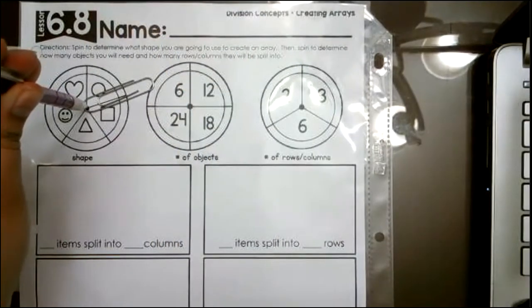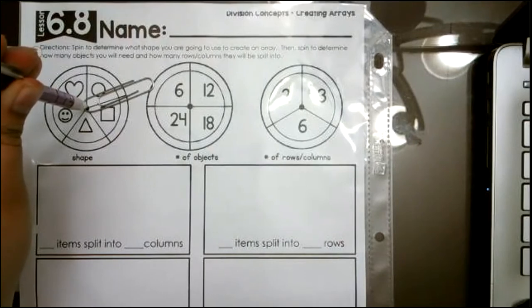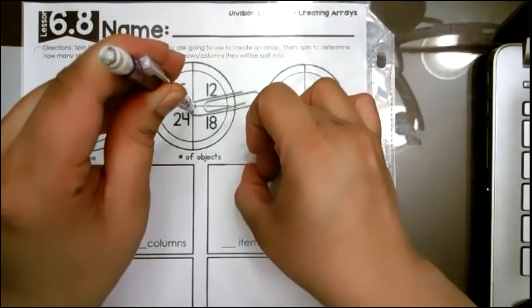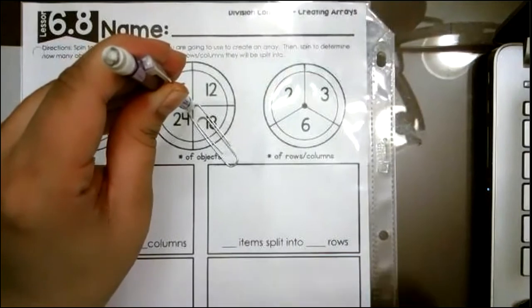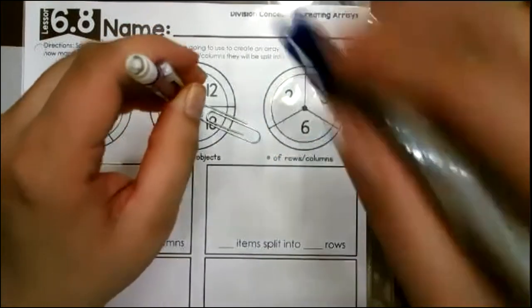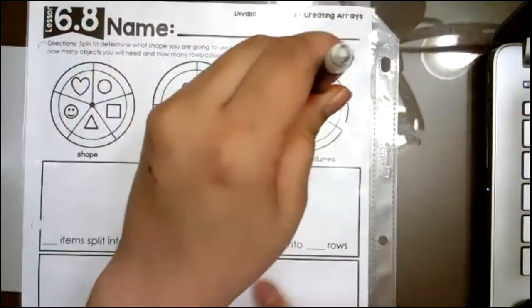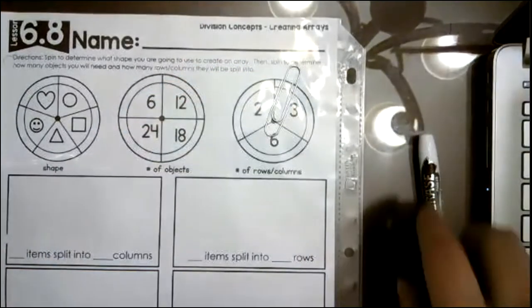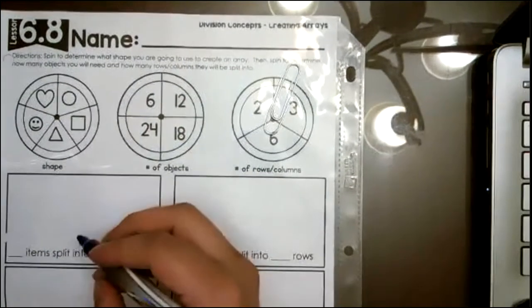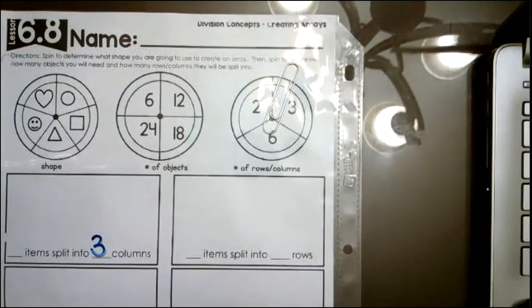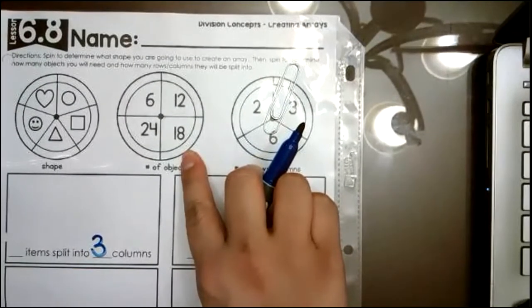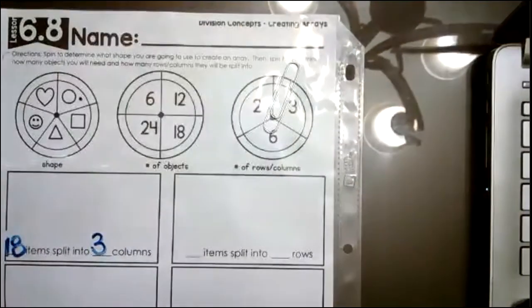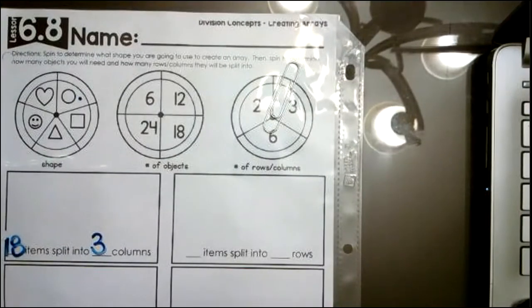And I'm going to flick it. It landed on circles. So the shape I'm going to do for my array is circles. Now I'm going to go and figure out what my spinner is going to land on for the number of objects. So it has 18 for the number of objects. And then we're going to do how many rows or columns. So three rows or columns. So it landed three rows and columns. My number of objects, it landed on 18.